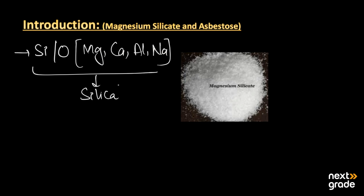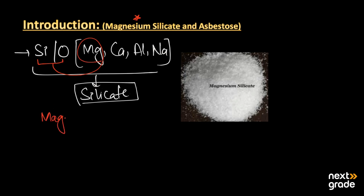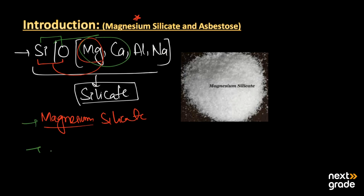As we are going to talk about here, in magnesium silicate, silicon and oxygen react with magnesium to make a silicate known as magnesium silicate. On the other hand, when oxygen and silicon react with both magnesium and calcium, the resulting silicate is calcium magnesium silicate, also known as asbestos.